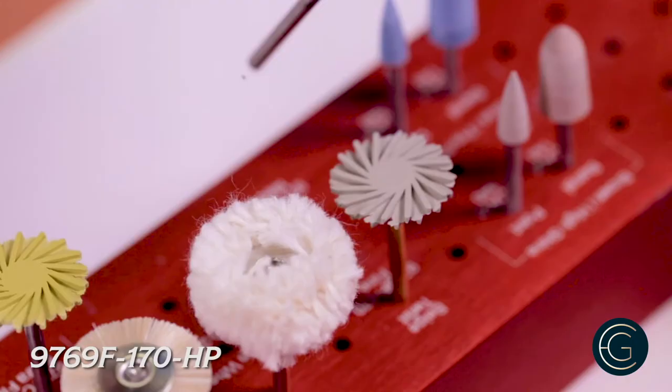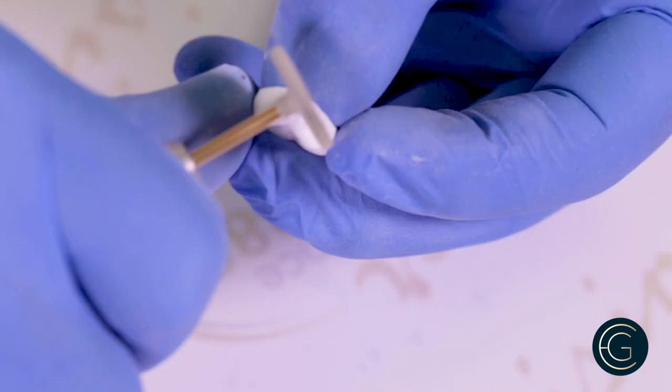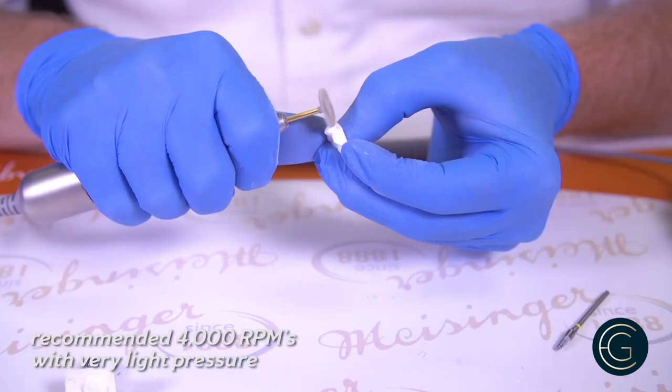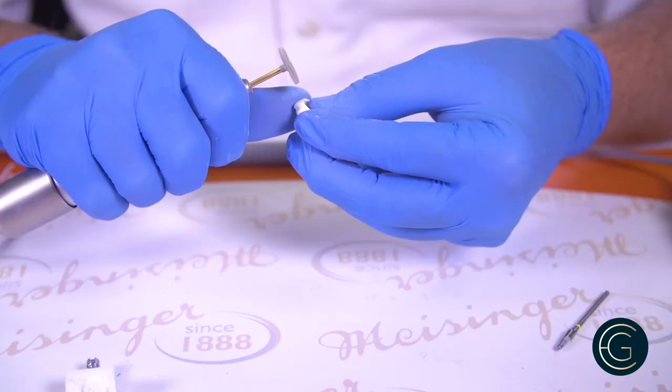Okay, this is the 9769F, the 170 fine. But this is going to help to put a nice shine on that. At this point, we're going to go very slow. Again, we're not pushing hard. We're letting the twist do the work for us. 4000 RPM. Again, do not go more than 4000 RPM with zirconia on this. And we're moving it, and we're getting a very, very nice shine on this, as you can see.